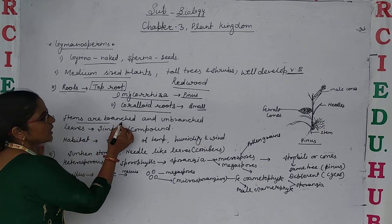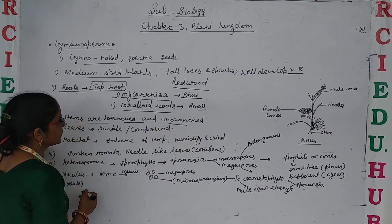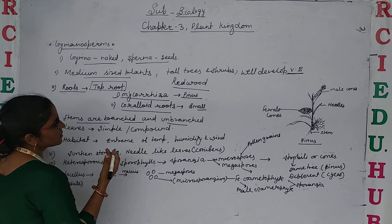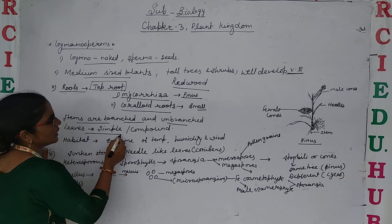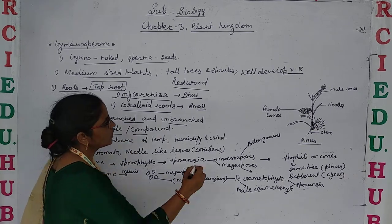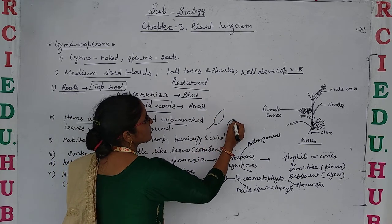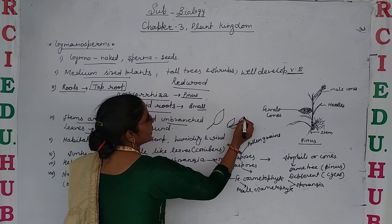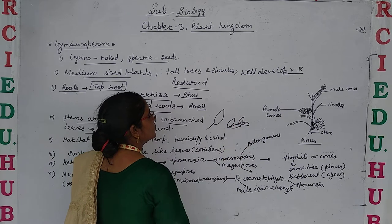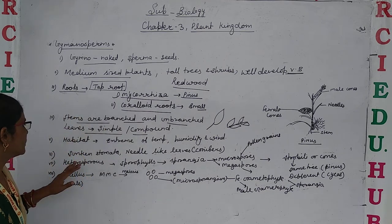Stems are branched as well as unbranched. For example, in pinus the stem is branched, and in cycas it is unbranched. Leaves are simple and compound — single leaves are present, but sometimes they are compound, arranged in a pinnately or palmately compound form.